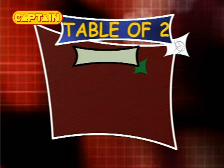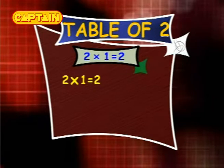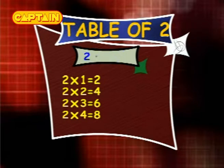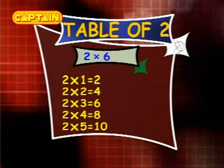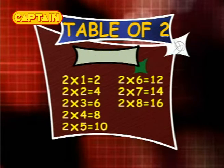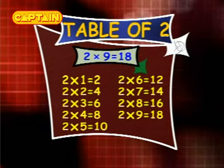Table of 2. 2×1 is 2. 2×2 is 4. 2×3 is 6. 2×4 is 8. 2×5 is 10. 2×6 is 12. 2×7 is 14. 2×8 is 16. 2×9 is 18. 2×10 is 20.